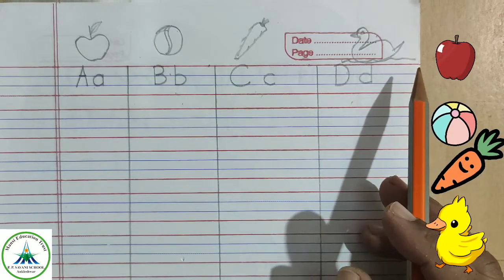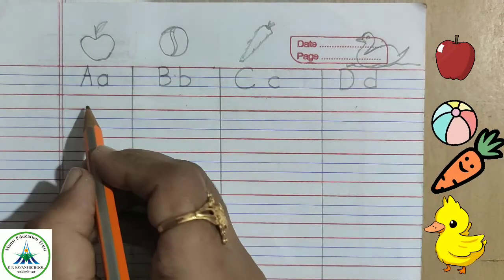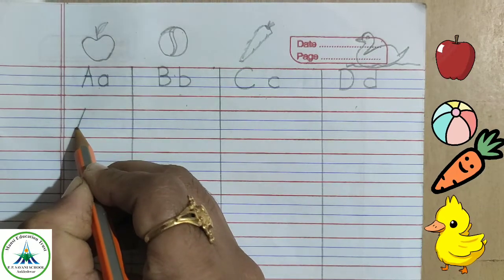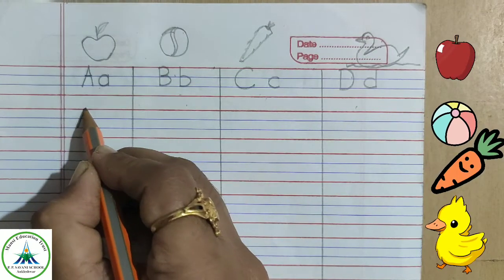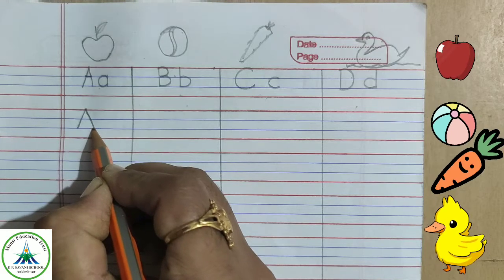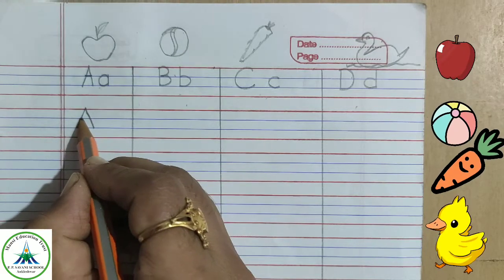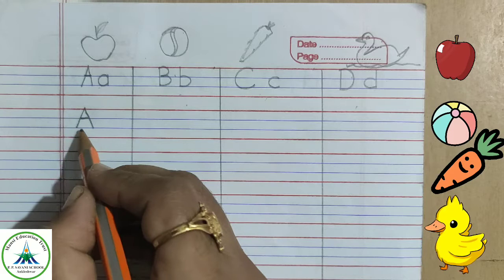Okay, now see how to write capital letter A. Make a slanting line from red line to blue line, then another slanting line in three lines and this slipping line, capital letter A.